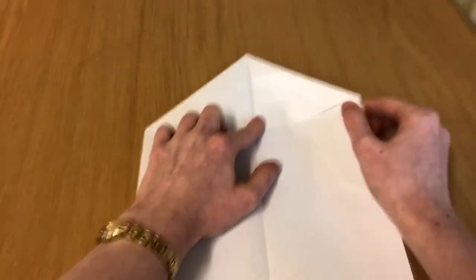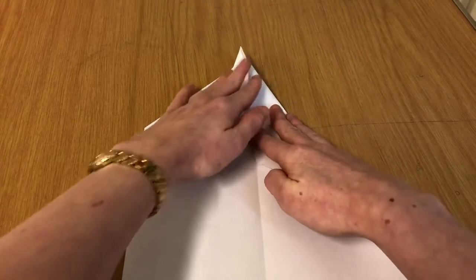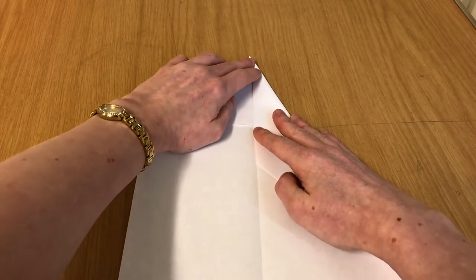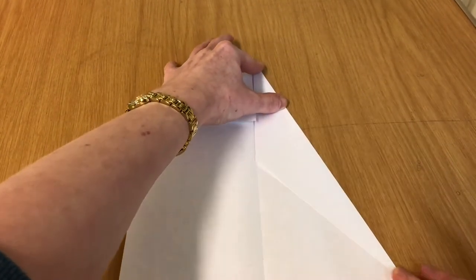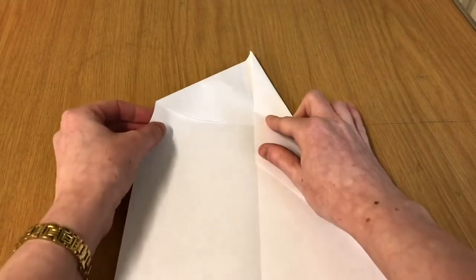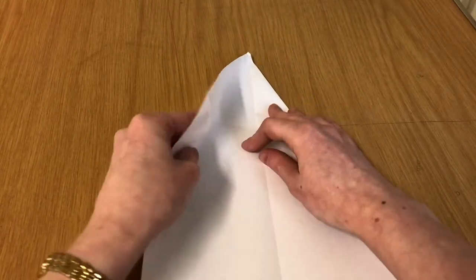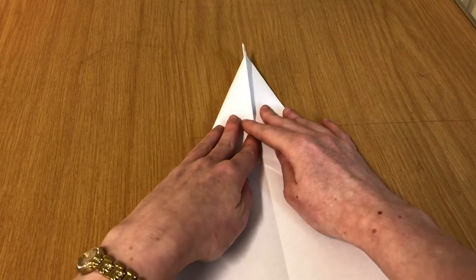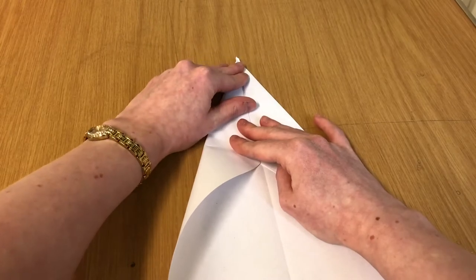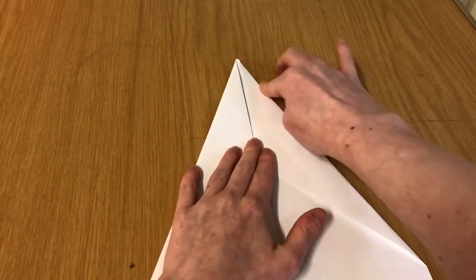Now taking your corner here, you're going to fold it in and down to the center line as well. Do the same on the other side. Fold it in and down. If the top crumples a little, don't worry too much about it. Try and keep a nice point there because that's going to be the top of your paper airplane.